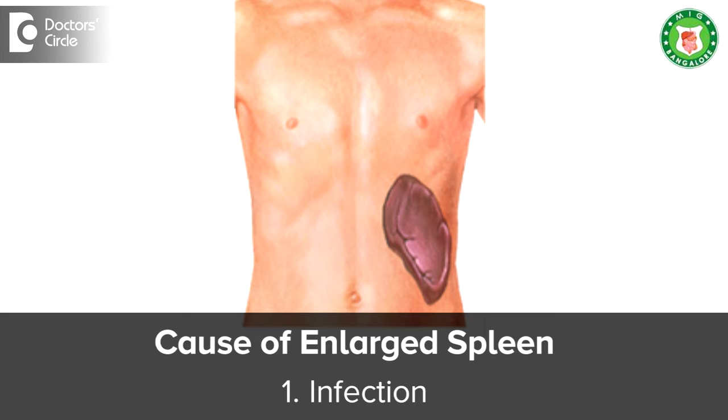Why does the Spleen get enlarged? Basically, Spleen gets enlarged. One is infection. If you have malaria, Spleen will enlarge. If you have tuberculosis, Spleen will enlarge. If you have typhoid, Spleen will enlarge. Infections is the one common reason for enlargement of Spleen. Number two is if there is any problem in the blood. Basically, if blood purification happens in Spleen, if there is any problem which reduces the lifespan of our blood cells, then we increase our Spleen. We call it as hemolytic anemias. This is number two.